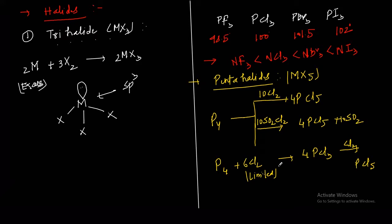Next point: pentahalides are thermally less stable. On heating they dissociate into trihalides and halogen. That is why PCl5 acts as a good chlorinating agent. We use this reagent in organic chemistry.